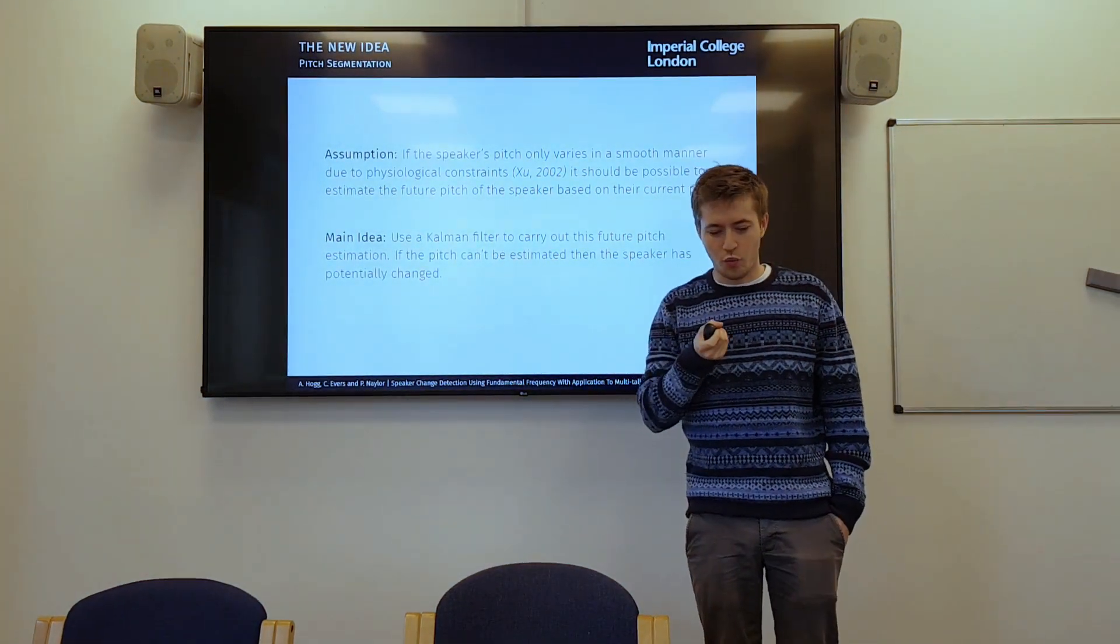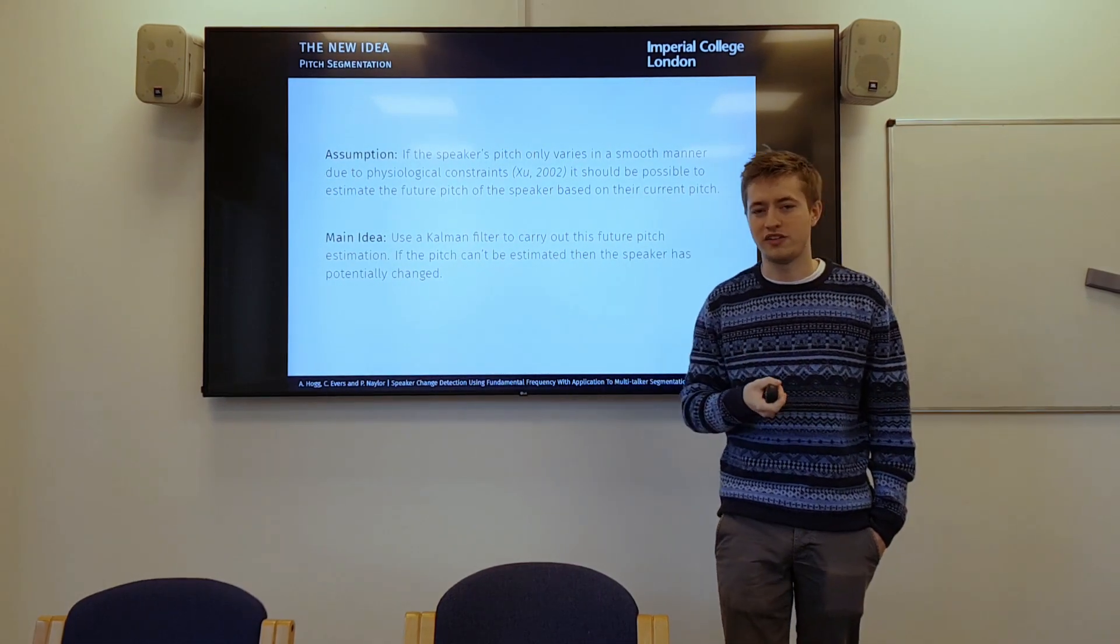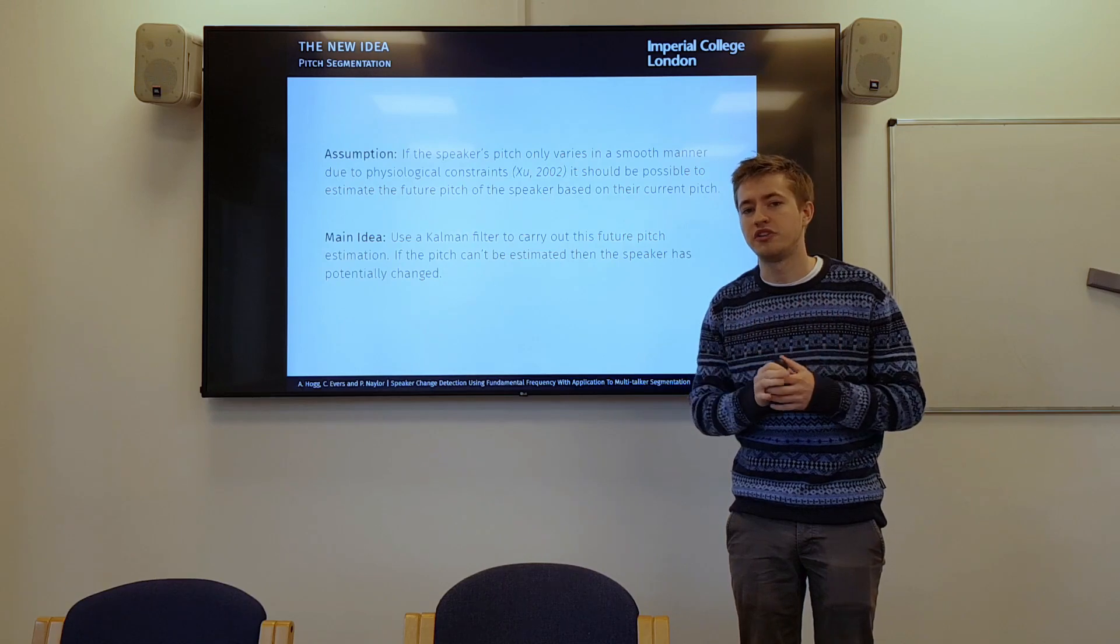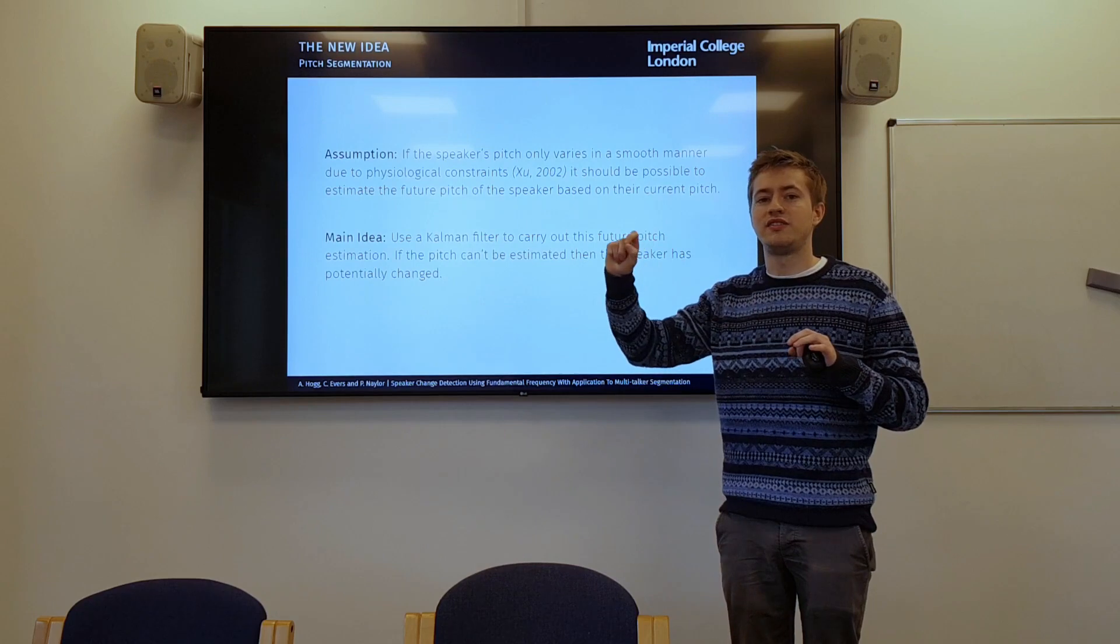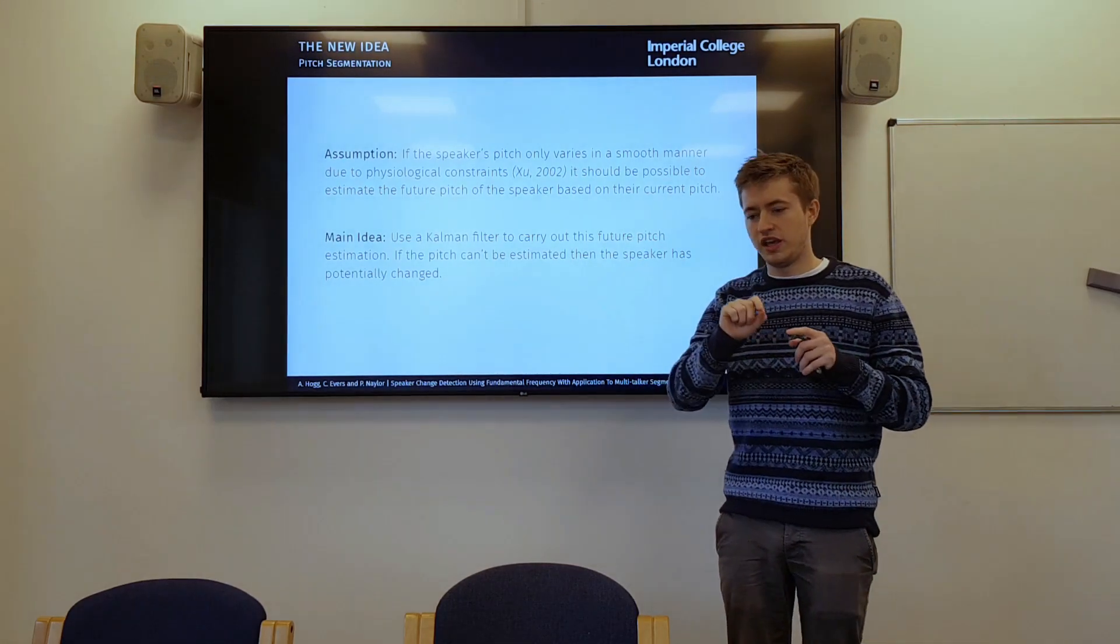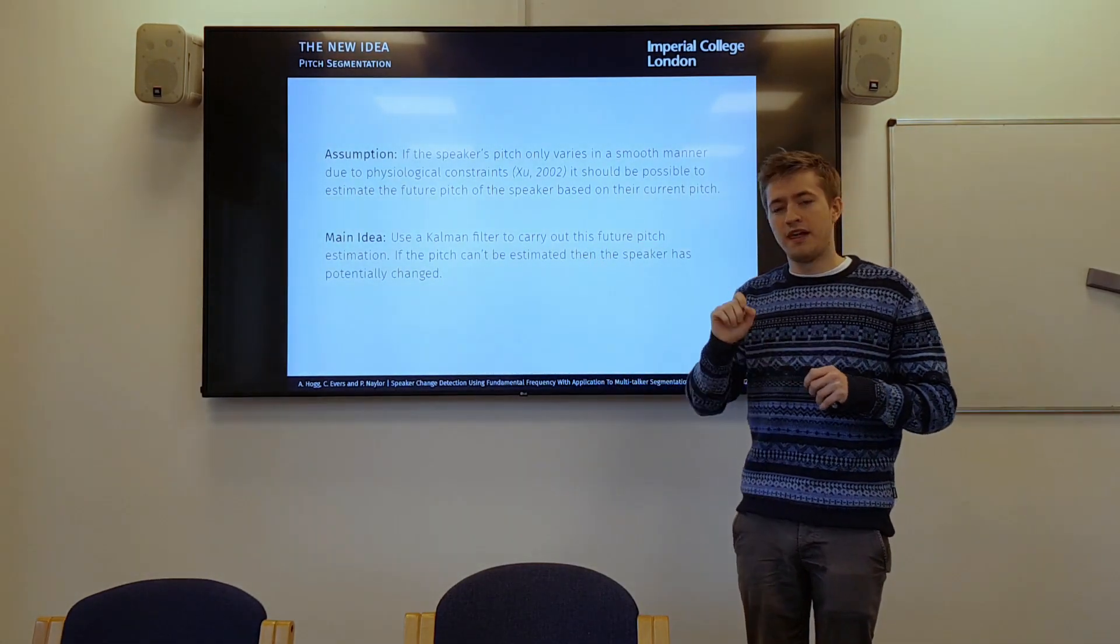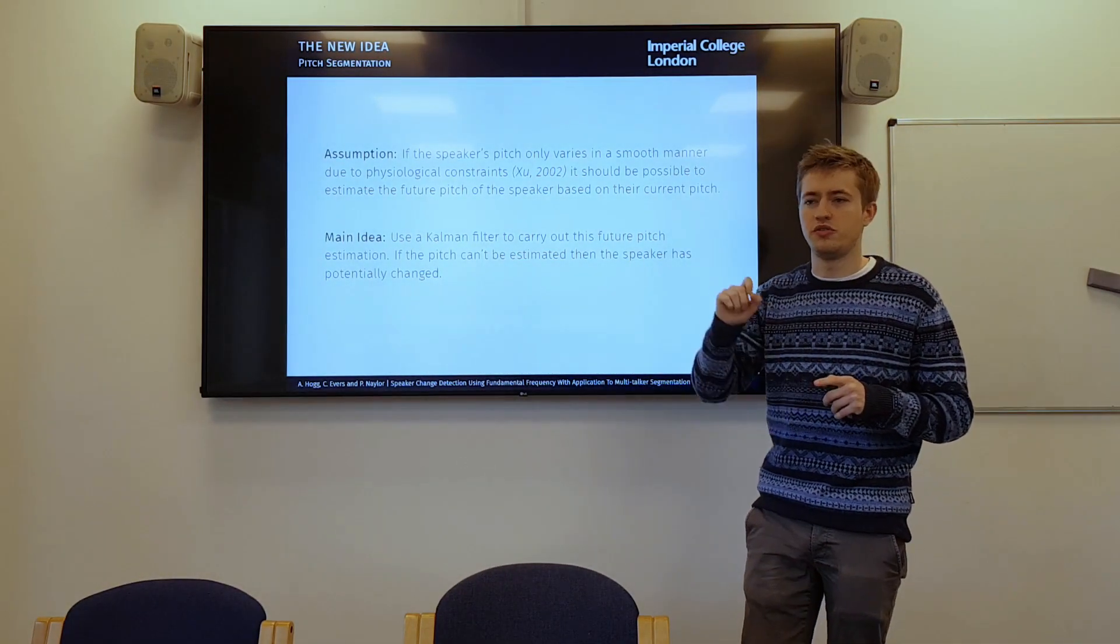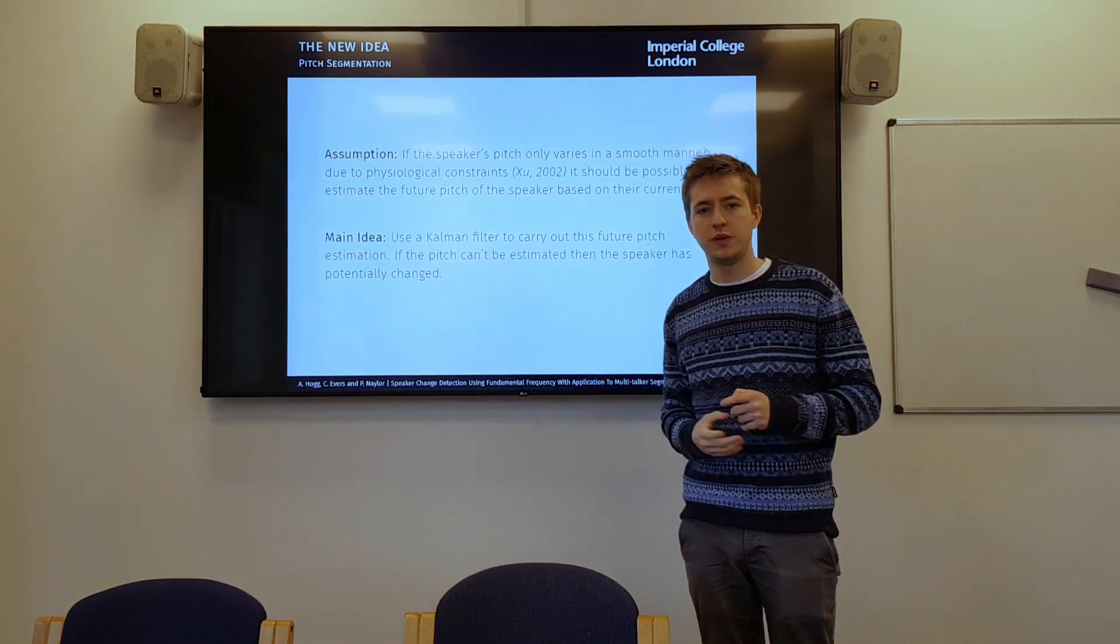So looking at pitch segmentation, let's start off with what our main idea is. So we assume that pitch is smoothly varying. That's been proven already. You have physiological constraints, so you can't vary your pitch that rapidly. Now, if that's the case, then surely we can model or at least predict future pitch values. And our idea is if we can easily predict future pitch values, or at least accurately do it, then if we can't, or if there's errors in those predictions, maybe that's not errors because we're poor at predicting the future pitch of a speaker.